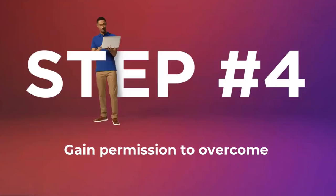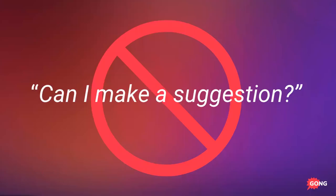Without this critical step, you will trigger resistance. You can execute every step before and after this, but if you leave it out your objection handling efforts will fall short because your buyer will resist. When I tell people you should gain permission — essentially ask your buyer for permission to overcome their objection — what I see a lot of salespeople asking is, 'Can I make a suggestion?' That is their line for gaining permission.